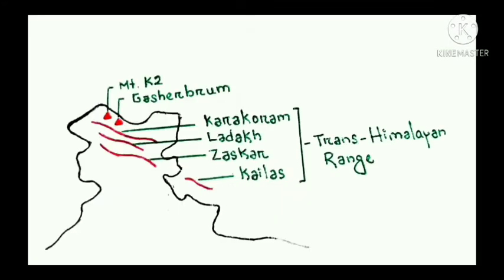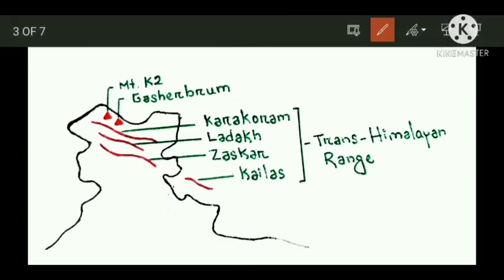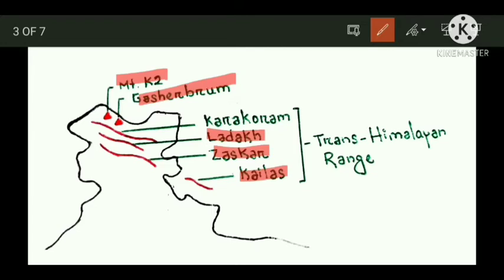Let's start from the Trans-Himalayan region. It starts from the Karakoram range, where you find two important peaks: Gasherbrum and K2, which is the highest peak of India and the second highest peak of the world. In the south, you can see the Ladakh range, Zanskar range, and Kailash range — these are part of the Trans-Himalayan range.